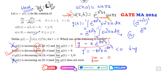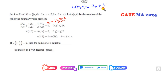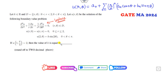Now look at the second question. This is the polar form of the Laplace equation. The shortcut trick: I can directly write the solution as a₀ plus summation of (r/a)^n times (aₙ cos(n theta) plus bₙ sin(n theta)), where n starts from 1.